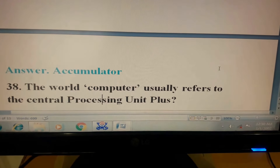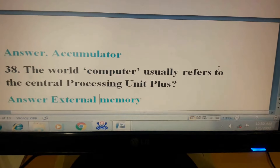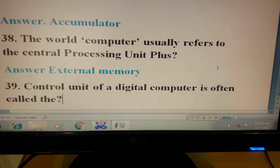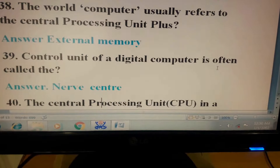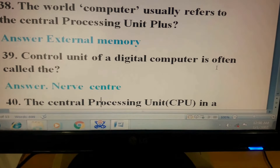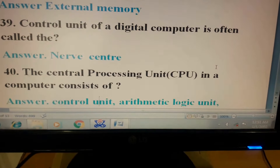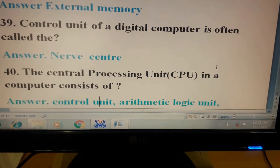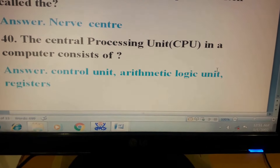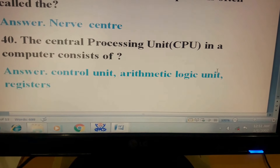Question 38: The bare computer usually refers to the central processing unit plus external memory. Question 39: Control unit of a digital computer is often called the nerve center. Question 40: The central processing unit (CPU) in a computer consists of control unit, arithmetic logic unit, and registers.